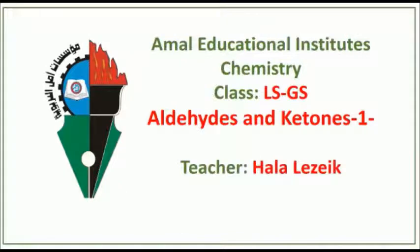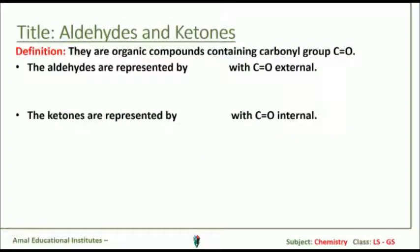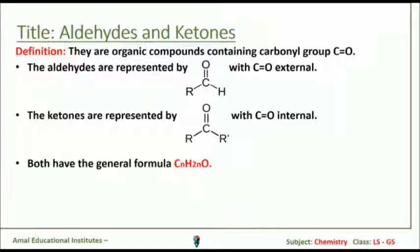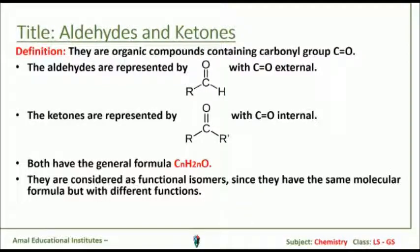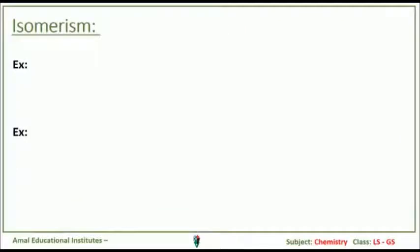Good morning. We'll start to explain aldehyde and ketone. Aldehydes and ketones are organic compounds containing a carbonyl group, C double bond O. Aldehydes are represented by RCHO, where the CO is external, whereas ketones are represented by RC double bond O R', where the CO is internal. Both have the general formula CnH2nO and they are considered as functional isomers since they have the same molecular formula but different functions.